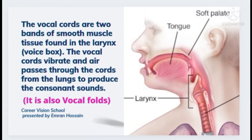The vocal cords are two bands of smooth muscle tissue found in the larynx, also known as the voice box. The vocal cords vibrate as air passes through them from the lungs to produce consonant sounds. This structure is also called the vocal cords.